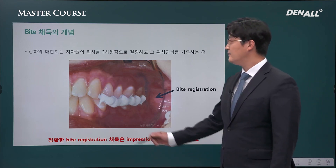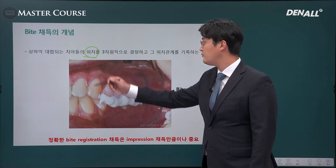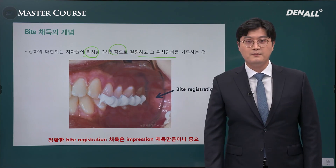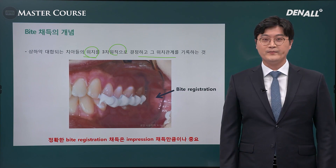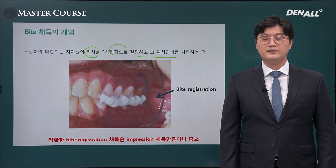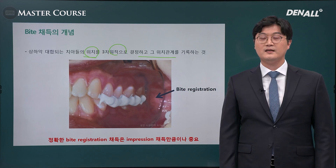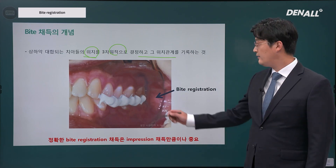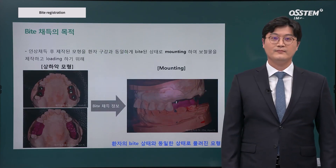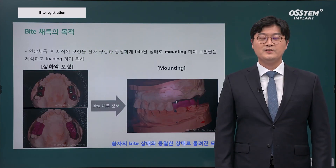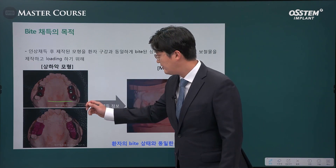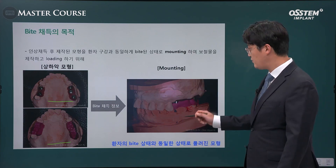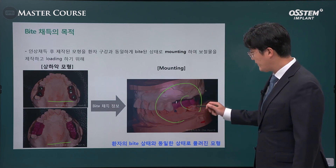Bite registration is about determining the three-dimensional positions of the teeth and recording their relationship on the lower and upper side. Using impression material, after taking the impression in the analog and when you mount the articulator, this concept is needed. After taking impressions on the upper and lower side, you create a plaster model and mount it three-dimensionally on the articulator.